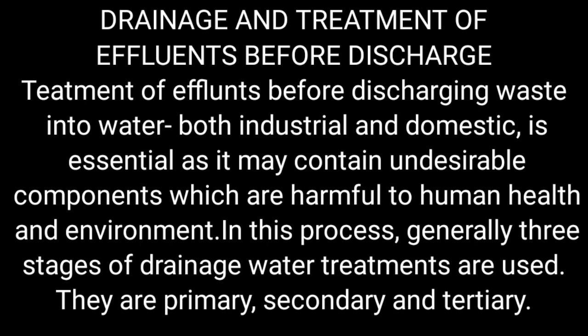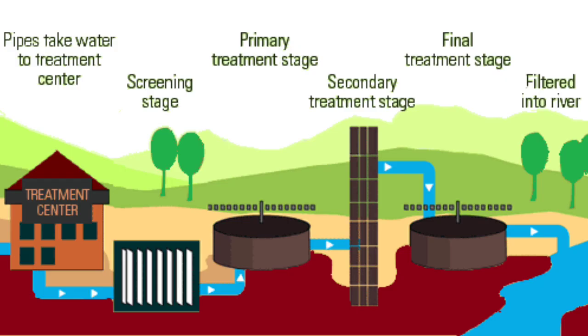The next method is drainage and treatment of effluents before discharge. Treatment of effluents before discharging into water bodies — both industrial and domestic — is very essential because they may contain undesirable components harmful to human health and the environment. Generally, three different stages are performed: primary, secondary, and tertiary treatment.